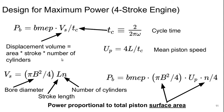And then we can write the mean piston speed here as UP is going to turn out to be 4L over TC. So this is just the average speed of the piston during operation.